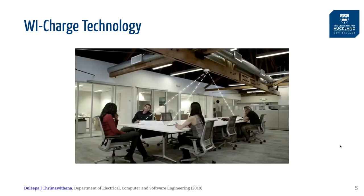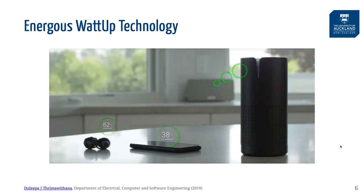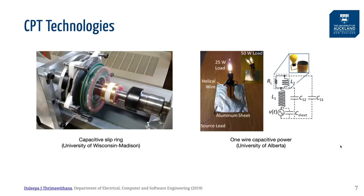With regards to radiative wireless power transfer, there are a number of companies developing technologies. As an example, we see Wi-Charge beaming IR light to devices that need to be powered. On the other hand, Energus uses RF beaming to transfer power wirelessly. CPT technology has also improved considerably over the past decade, but it's still mainly used to transfer power over shorter distances, like in a slip ring.